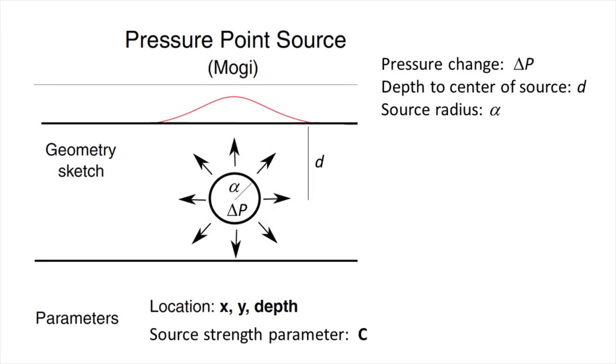Here I describe the model most frequently used to interpret volcano deformation. The model assumes a point source of pressure change within an elastic half-space, as shown in this figure.